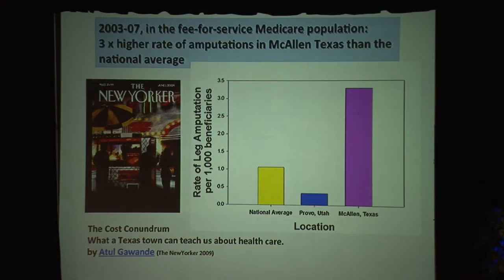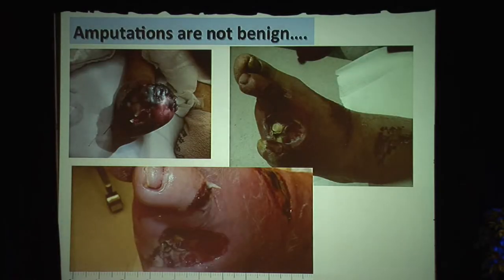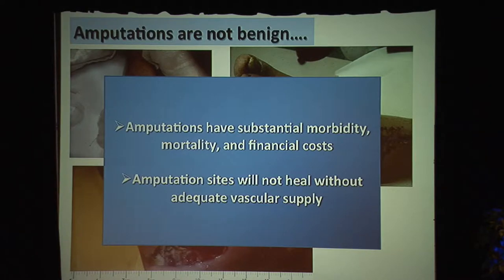In fact, some towns in South Texas, such as McAllen, have three times the higher rate of amputations than the national average. So we're developing a reputation that not only do we shoot first and ask questions later, but we amputate first and ask questions later. These are just some of my patients who have had amputations. Those of you who take care of these patients know that amputations are not benign — substantial morbidity, financial costs — and there's the fundamental tenet that amputation sites won't heal if we don't have adequate vascular supply.